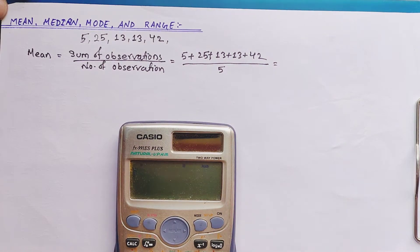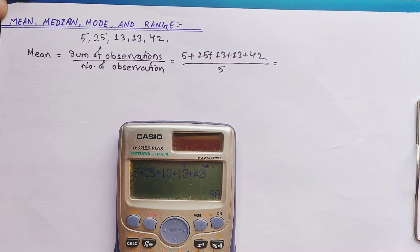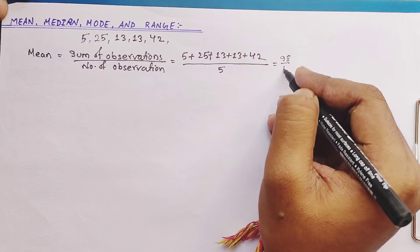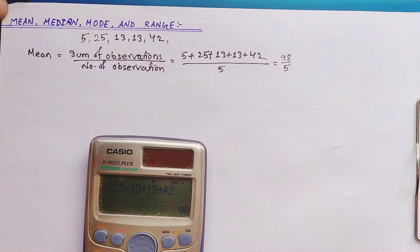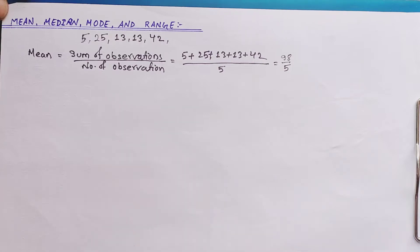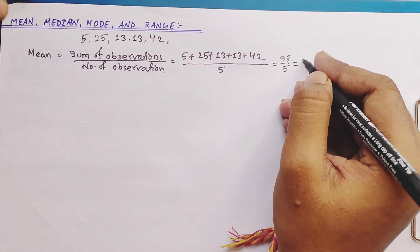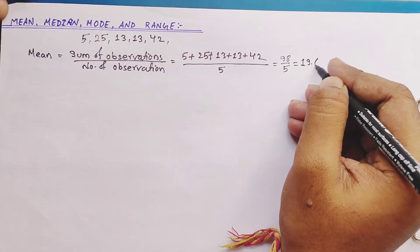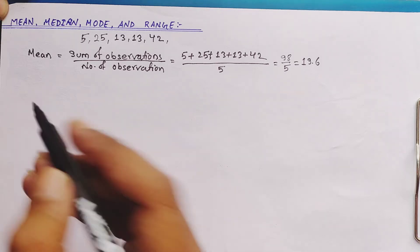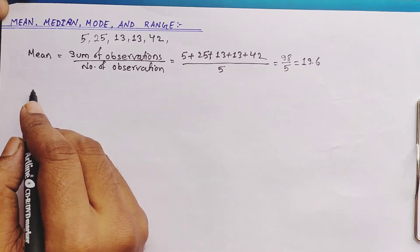On adding 5 plus 25 plus 13 plus 13 plus 42 we get 98. So 98 divided by 5 gives us 19.6. This is our answer for the mean of these observations. Now let's move toward median.